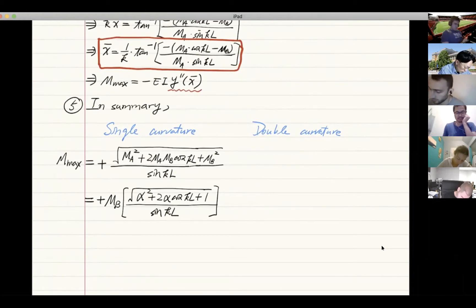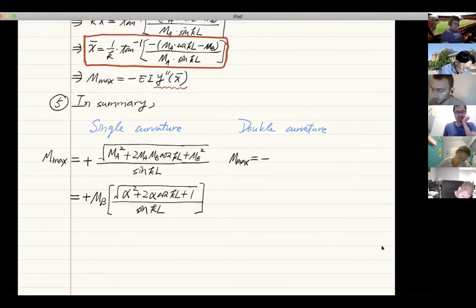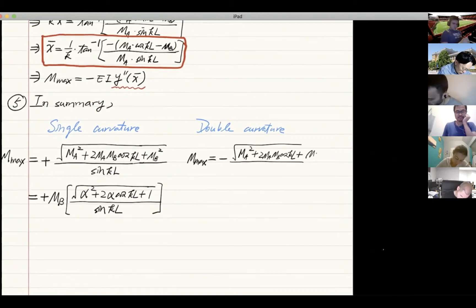For double curvature, the maximum is negative square root of MA square plus 2 MA MB cosine KL plus MB square over sine KL.